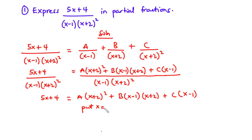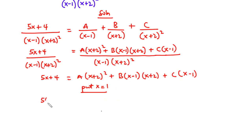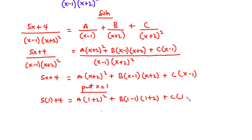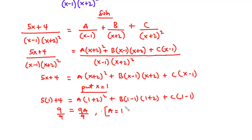Putting x equals 1: 5 times 1 plus 4 equals A times 1 plus 2 all squared plus B times 1 minus 1 times 1 plus 2 plus C times 1 minus 1. That gives 9 equals 9A, since B and C go to 0. Dividing through by 9, we get A equals 1.